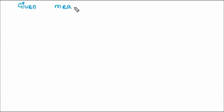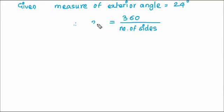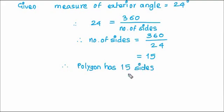Given: this is a regular polygon. The formula for measure of exterior angle gives us: 24 is equal to 360 upon number of sides. We move number of sides to one side and 24 to the other. Since 24 is dividing, when it goes to the other side it becomes the divisor. So, number of sides equals 360 divided by 24, which gives us 15 sides.